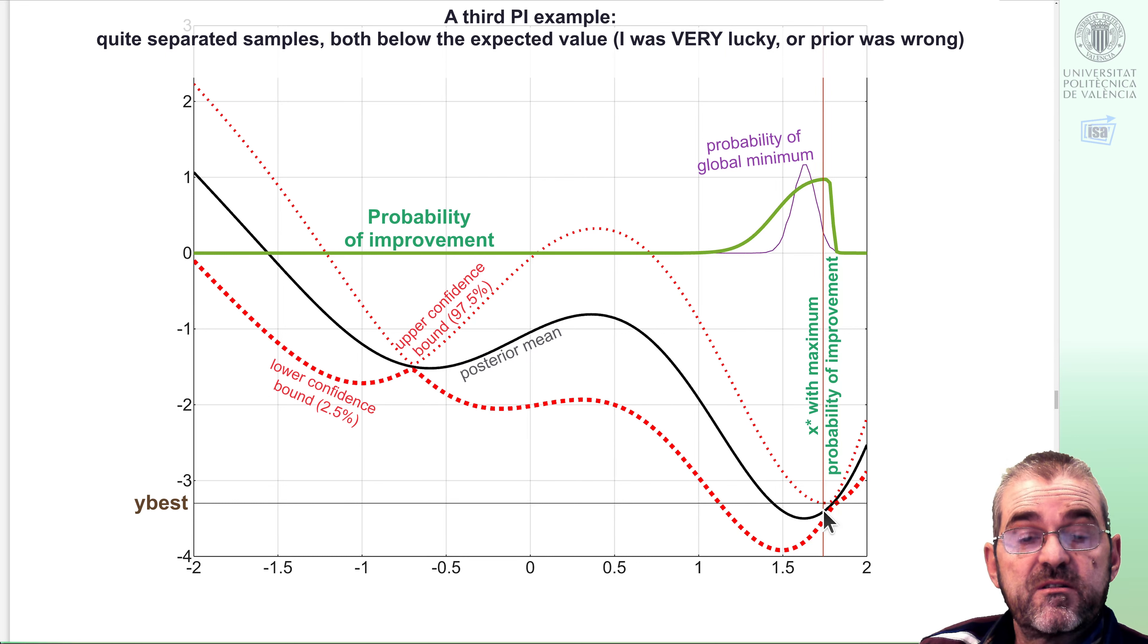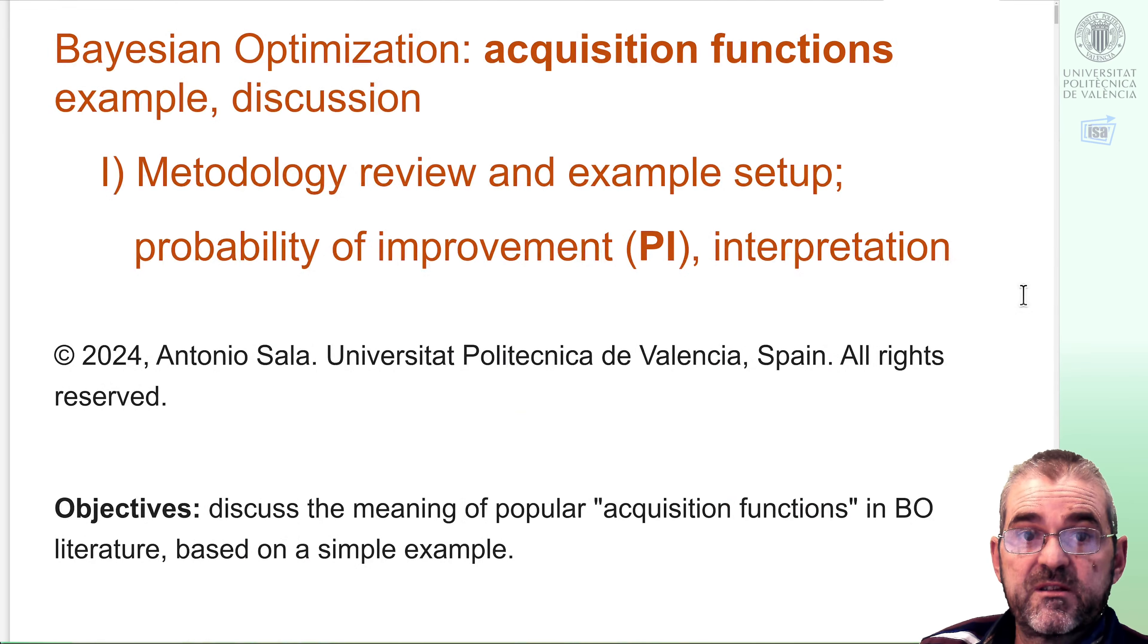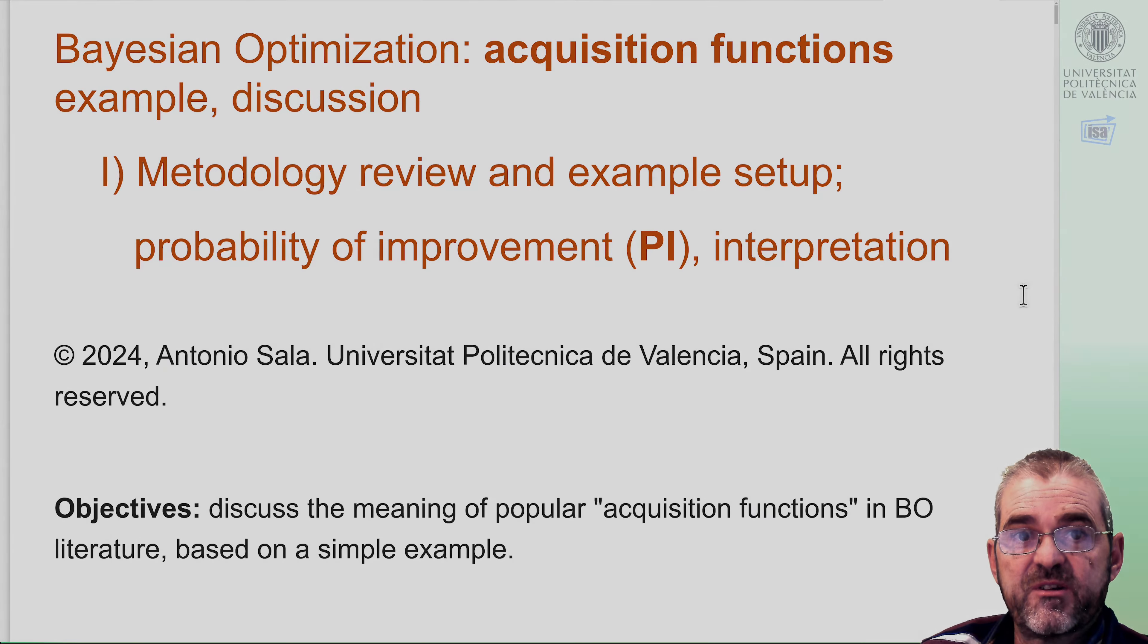Let us conclude. In this video, we discussed the intuitive meaning of probability of improvement with three datasets. A first dataset, in which we interpreted that plot as a sort of cautious gradient step, because we have two close aligned points that indicated the downward direction. And then we had two other datasets, in which basically, if we had very bad samples, then probability of improvement told me just look elsewhere, the further the better from your unlucky samples. And if I have very good samples, probability of improvement tells me to keep very close to your best sample. So with these ideas, we end the discussion on this meaning of the probability of improvement and comparison with other acquisition functions will be carried out in sequel videos. Thanks for watching.